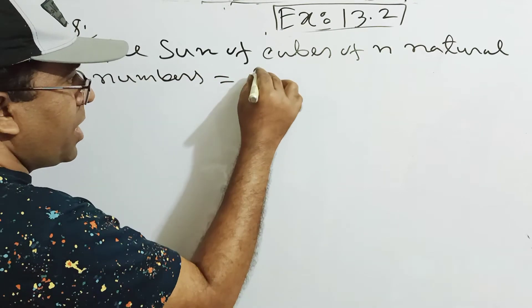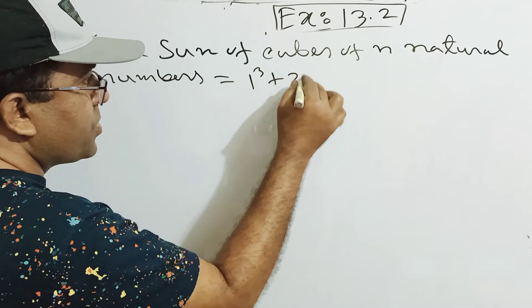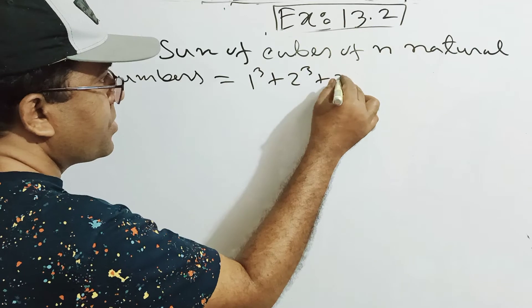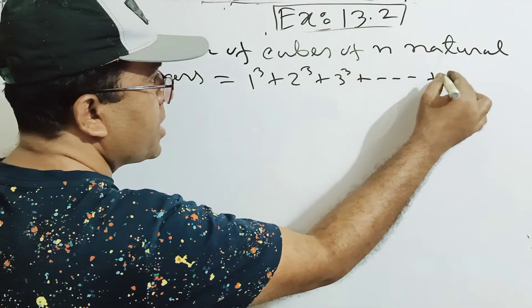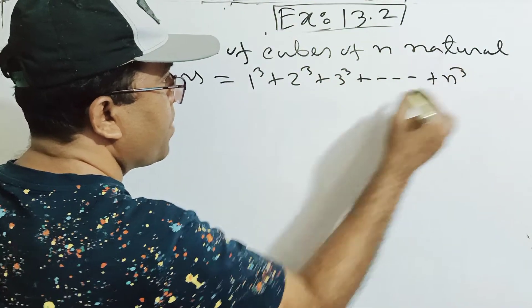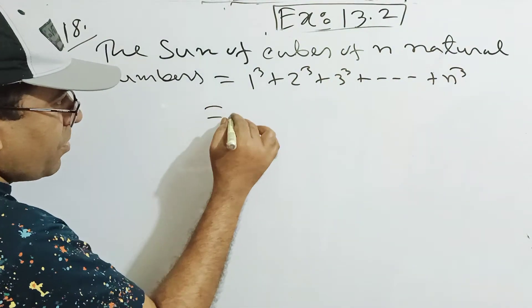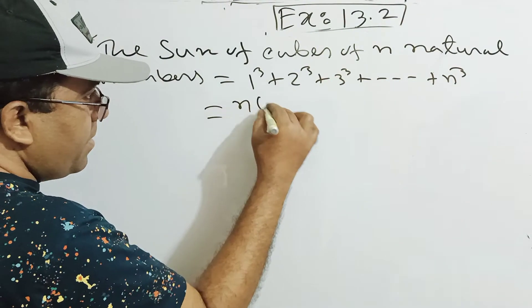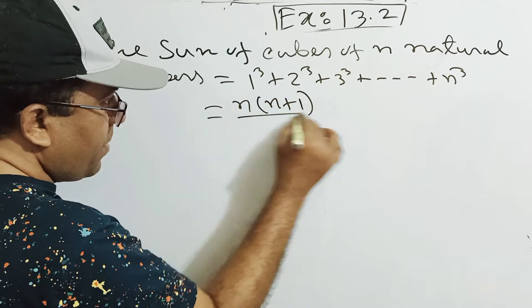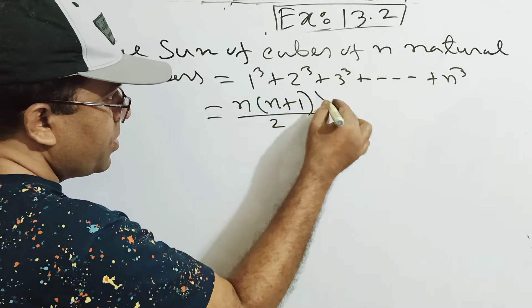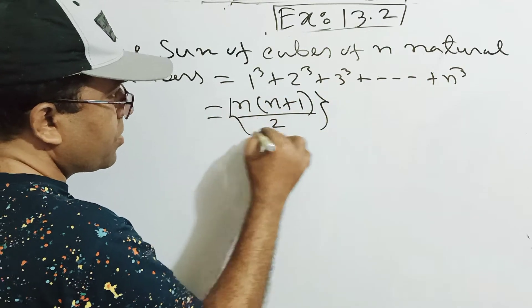So let's take: 1 cube plus 2 cube plus 3 cube plus dot dot plus N cube. The formula is [N(N+1)/2] whole squared.